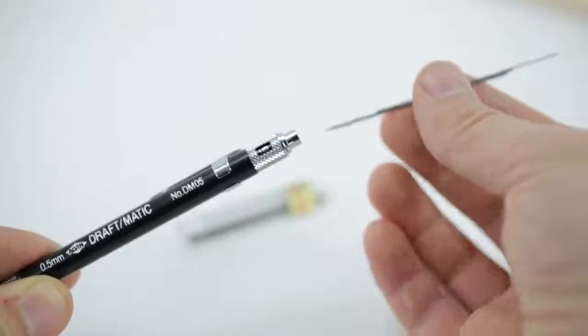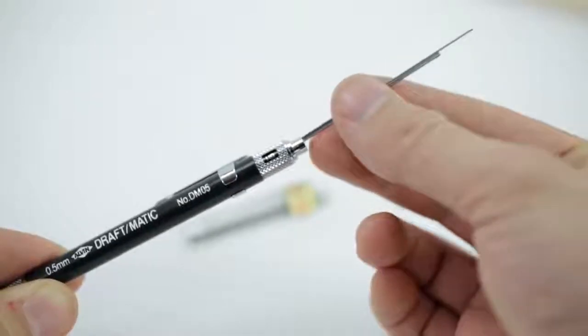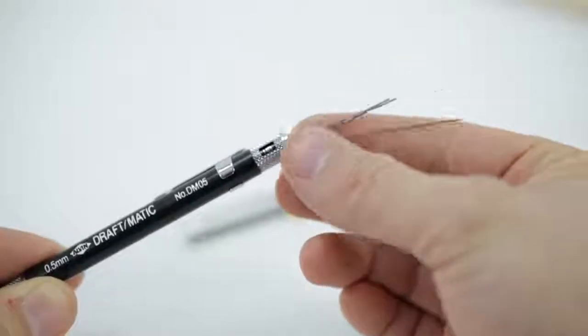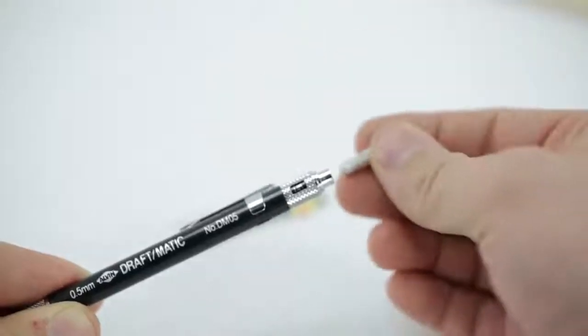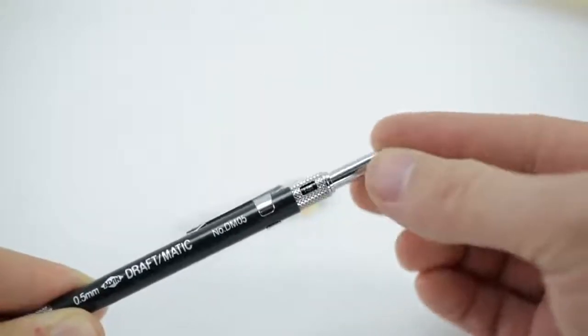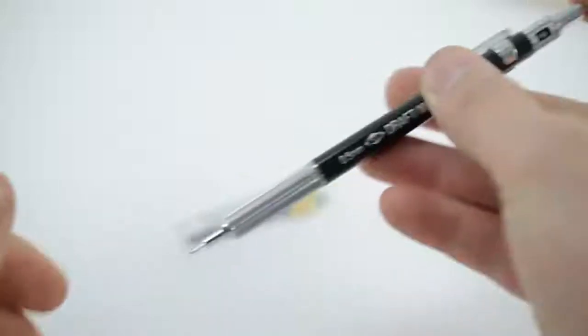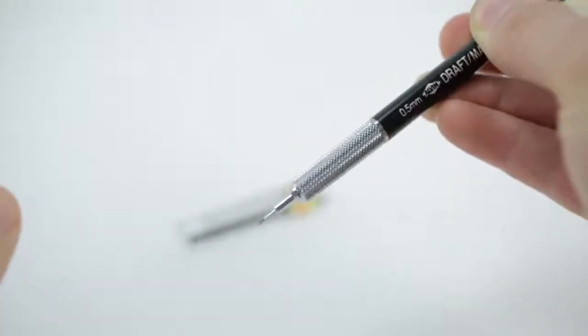Now, place the leads inside the opening. It's best not to load more than three pieces in at once. Then, replace the eraser and cap and begin to click until the lead automatically feeds out of the pencil.